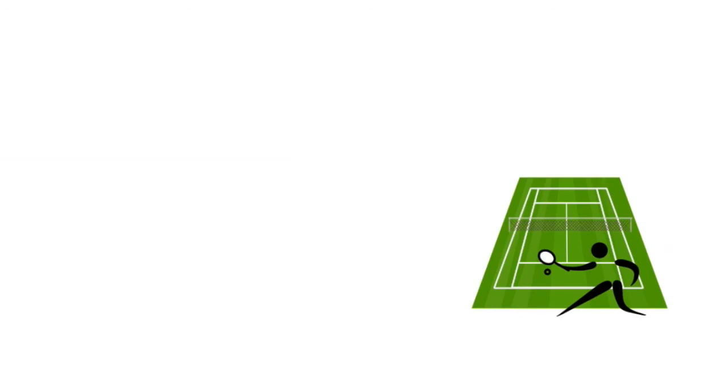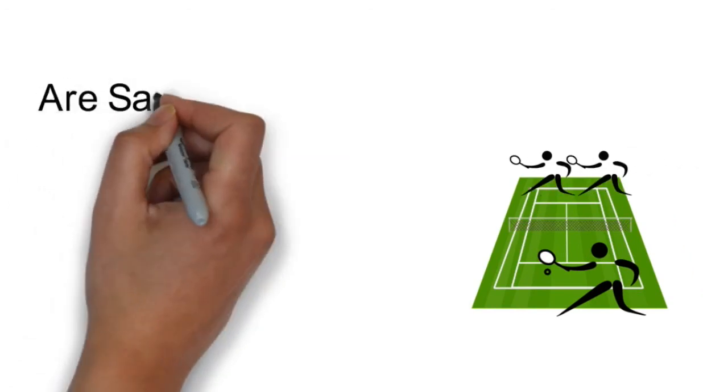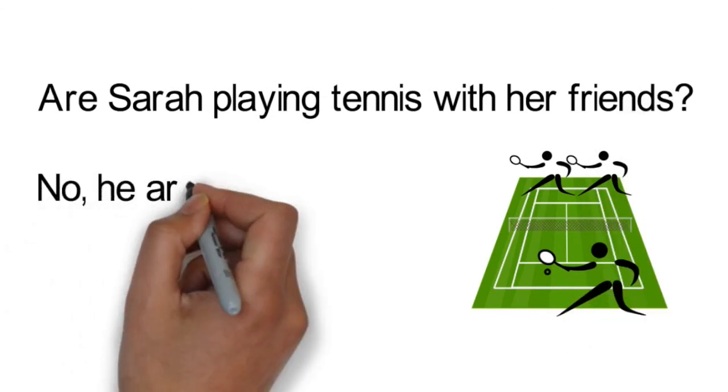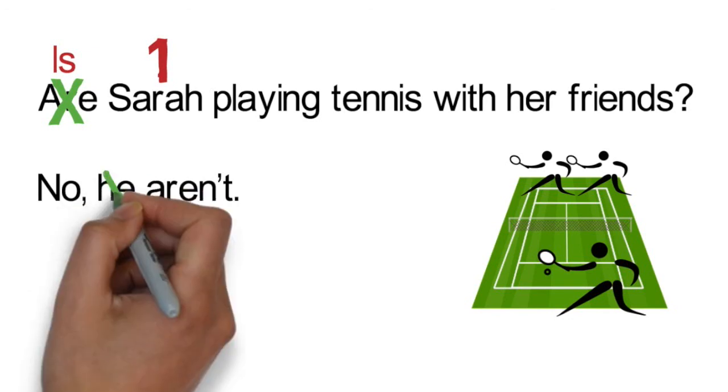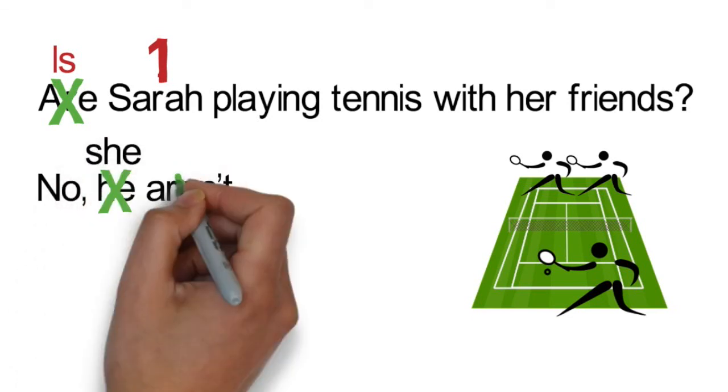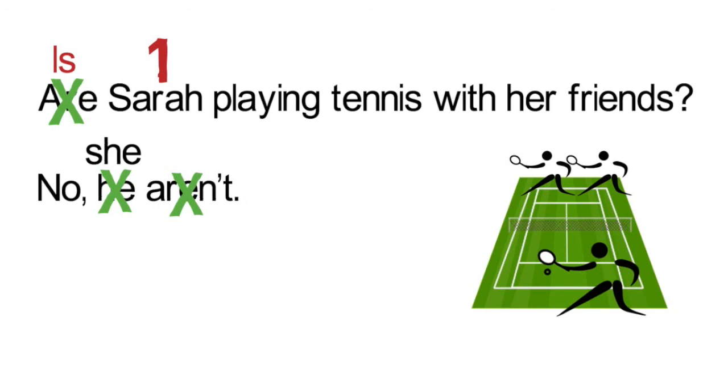Let's try this question. Are Sarah playing tennis with her friends? No, he aren't. Can you identify the mistakes in this conversation? Let's start with the question. Sarah is singular, and the form of the verb to be for Sarah is is. So the question should be, is Sarah playing tennis with her friends? Now let's turn to the answer. He is not correct because Sarah is a she. And aren't is not correct because it does not agree with he. The verb should be, no she isn't.